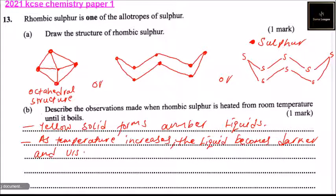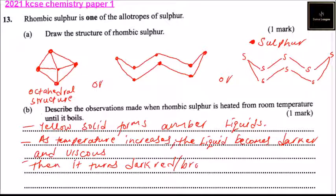As temperature continues to increase, it turns dark red or brown and less viscous. That is the observation.